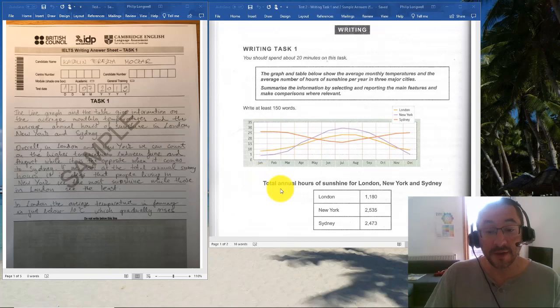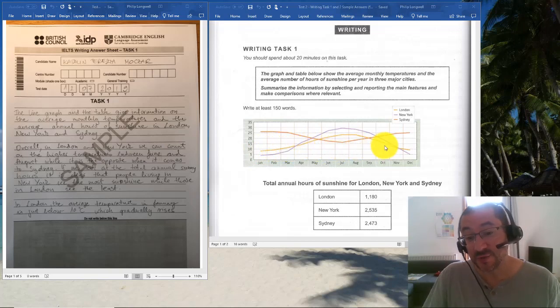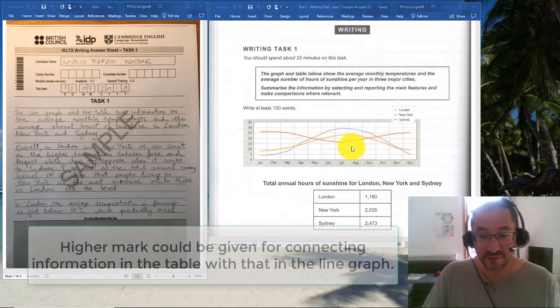We have the temperatures broken down into 12 sections by month of the year, and then we have a total number of hours below as a separate thing. We could interact with these two, so we could talk about the fact that New York and London, being northern hemisphere cities, are probably going to have more sunshine during the warmer months.